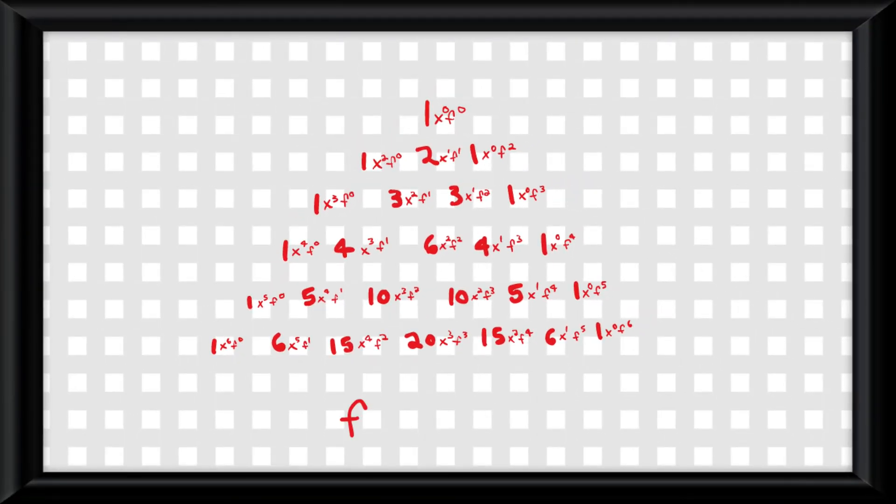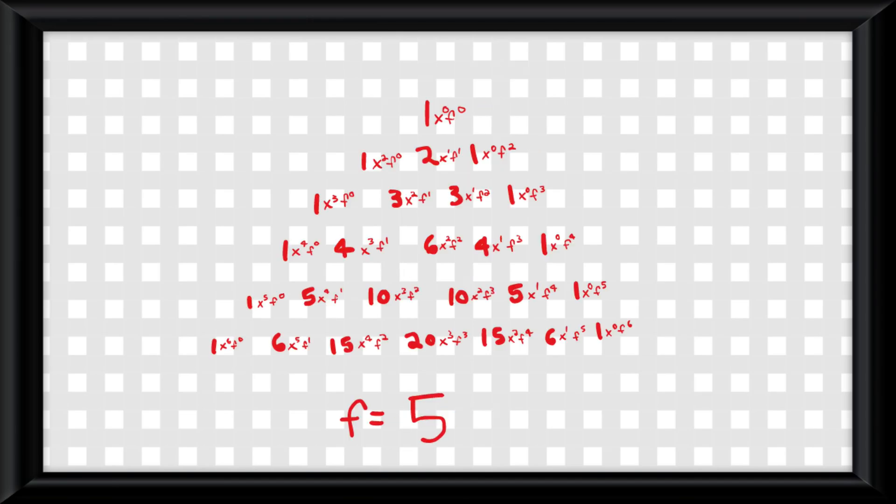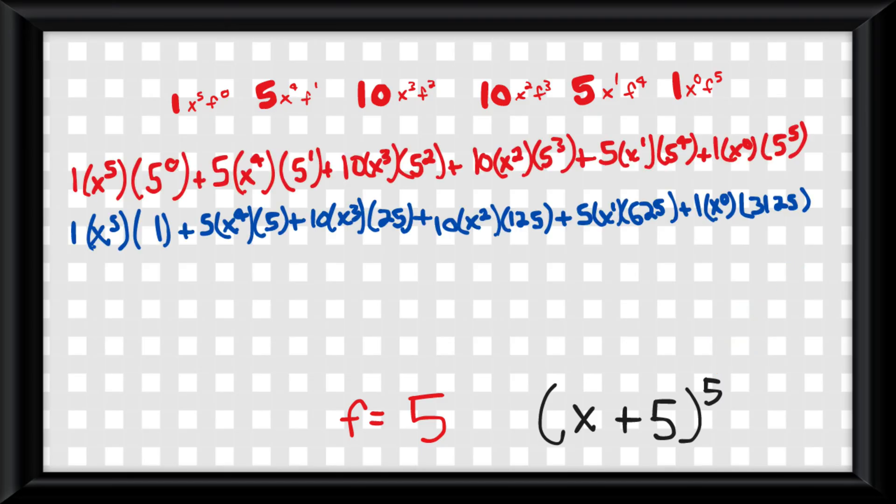consider the f term referring to the factor and whatever factors in the parentheses we plug into the f spot, and of course the fifth row because it's the fifth power. Then solve the exponent and multiply each term, and you get the answer.